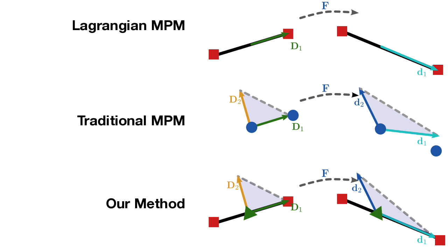Traditional MPM incrementally updates d1 and d2 from the deformation of the grid, which accumulates error but tracks both components. Our method computes d1 from the mesh and d2 incrementally from the grid.